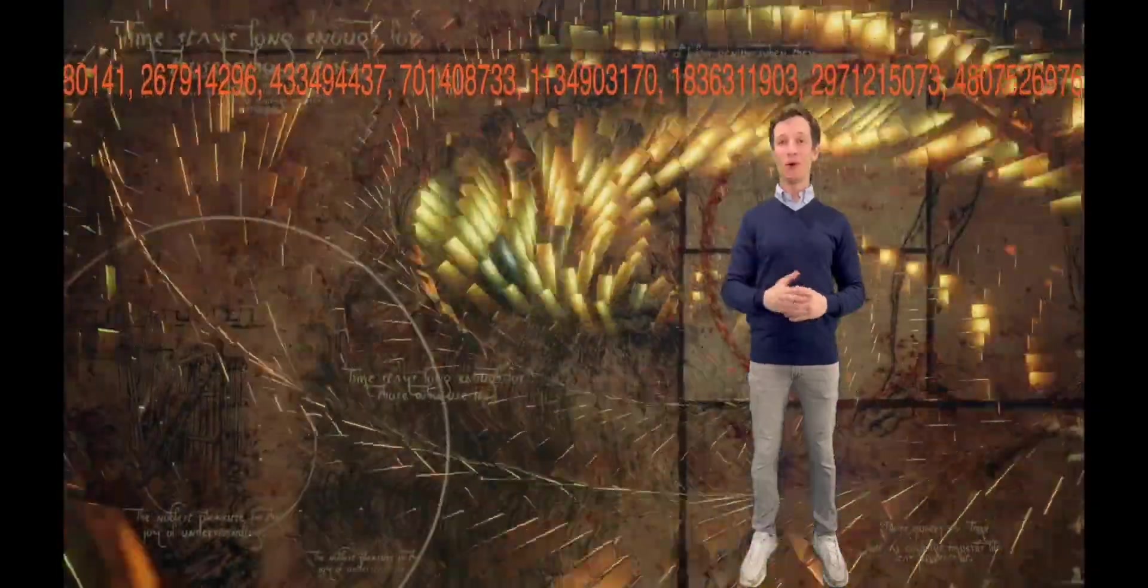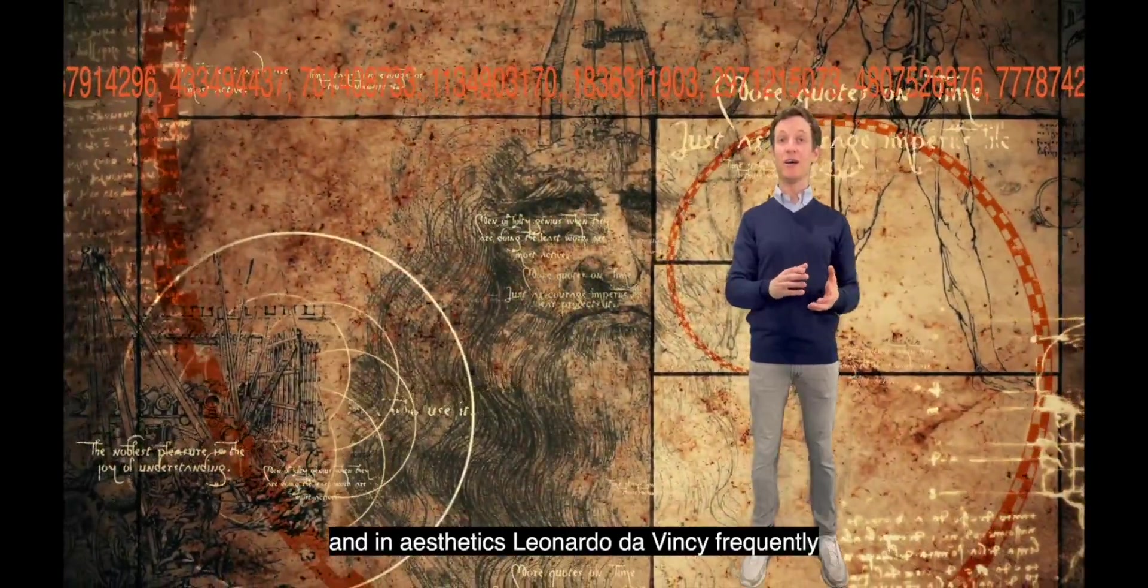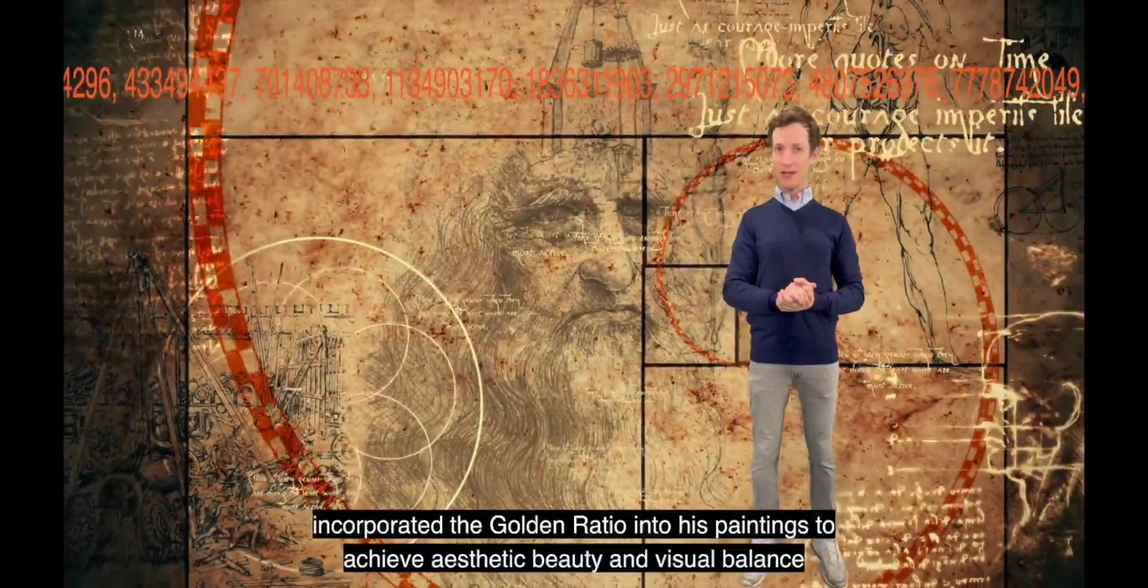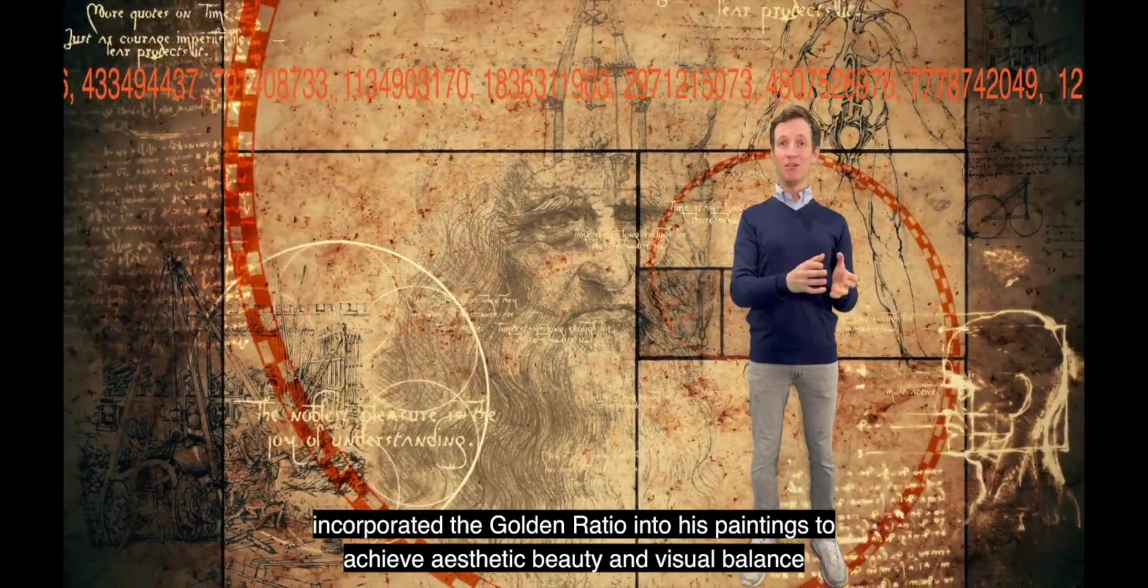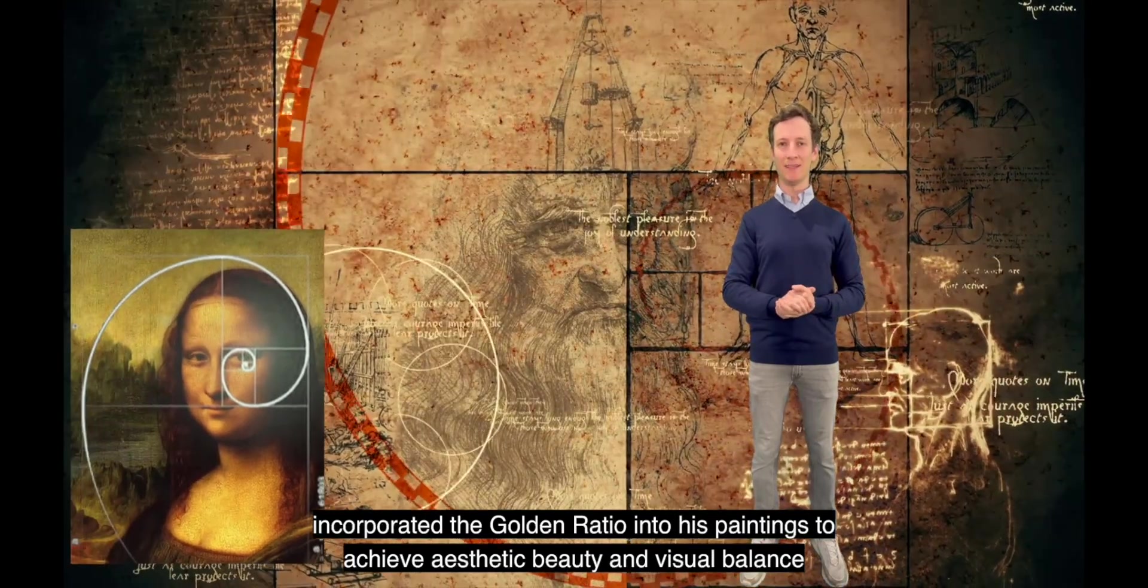There are many more examples in nature and aesthetics. Leonardo da Vinci frequently incorporated the golden ratio into his paintings to achieve aesthetic beauty and visual balance.